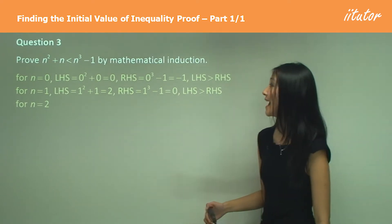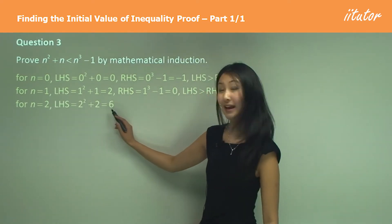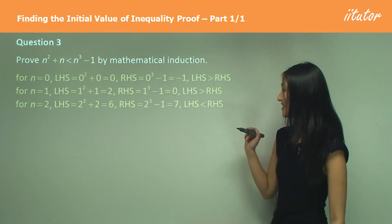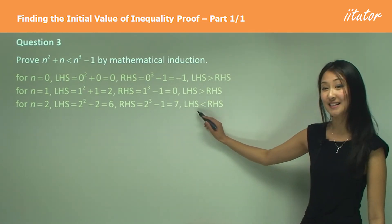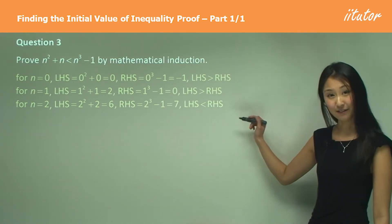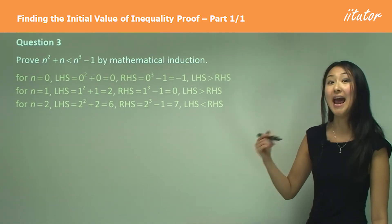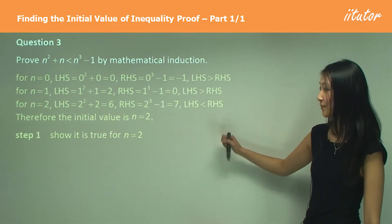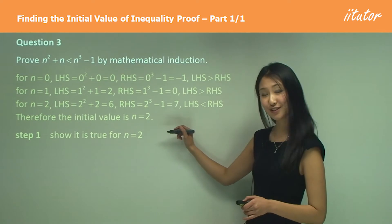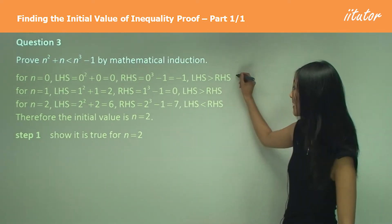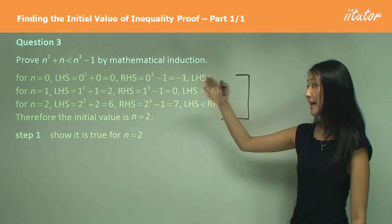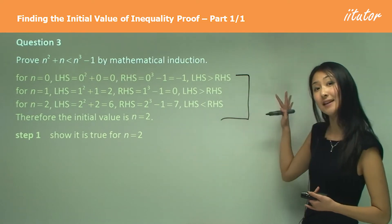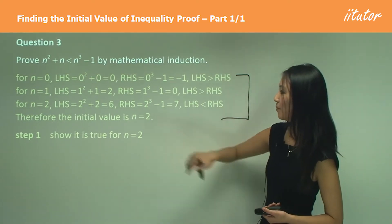So we just keep going to the next number. 2 squared plus 2 equals 6, and 2 cubed minus 1 equals 7. Yes — finally we see that this is when the left-hand side becomes less than the right-hand side. So we know we're working with n is greater or equal to 2. The initial value is 2, which means in Step 1 we show it is true for n equals 2. This is the extra step we have to take if we're not told what n has to be greater or equal to.